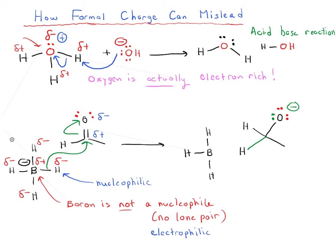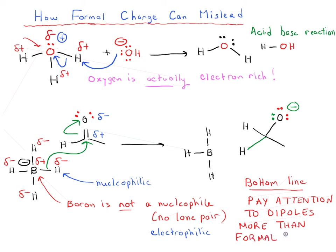So the bottom line is pay attention to dipoles more than formal charge. Because it's the dipoles that are going to tell you where the electrons are much more than the formal charge will. If you just followed formal charge in this example, you'd think that oxygen was going to accept a pair of electrons, which clearly it doesn't.